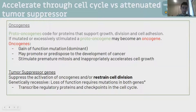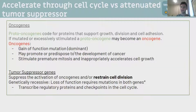Now some concepts about how normal cells become cancers. In a normal cell you have proto-oncogenes, which are genes that code for proteins that support growth, division, and cell adhesion - essentially supporting proliferation and progression through the cell cycle. If a proto-oncogene mutates and becomes excessively stimulating, it becomes an oncogene. Oncogenes are a gain of function mutation and they are dominant. Cells that proliferate quickly tend to have a survival advantage, so it's a dominant mutation. They stimulate premature mitosis and inappropriately accelerate cell growth.